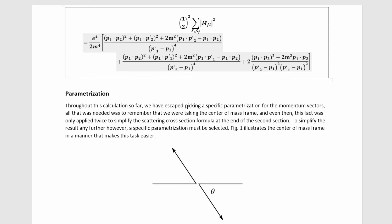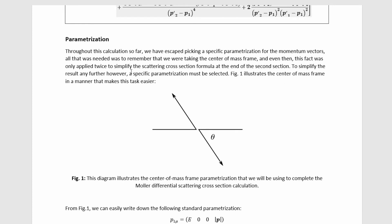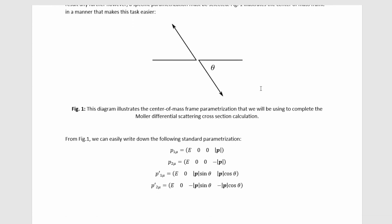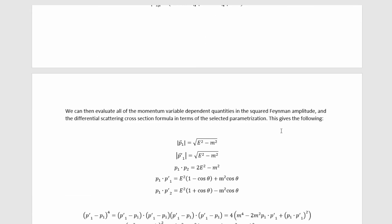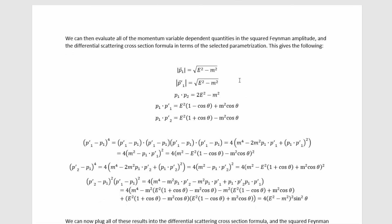Throughout this calculation we have escaped picking a specific parameterization for the momentum vectors — we only needed the center of mass frame twice to simplify the cross-section formula. To simplify the result any further, a specific parameterization must be selected. Figure 1 illustrates the center of mass frame in a way that makes this easy, so we write down the standard center of mass parameterization for particles of equal mass. We then evaluate all momentum-variable-dependent quantities in the squared Feynman amplitude, obtaining the relevant numerator quantities and denominator quantities.